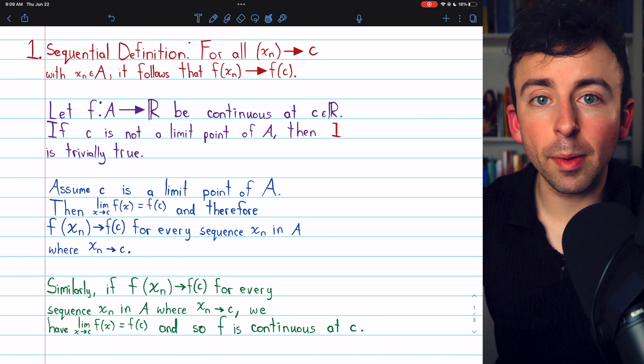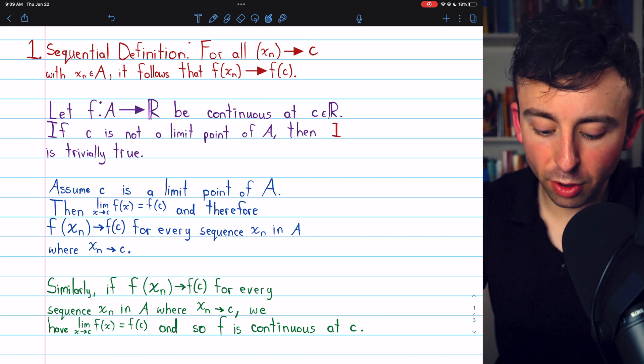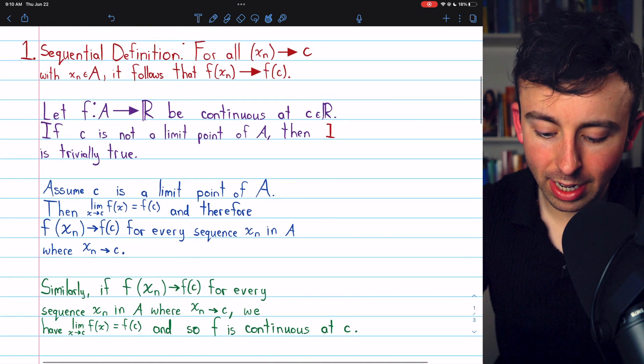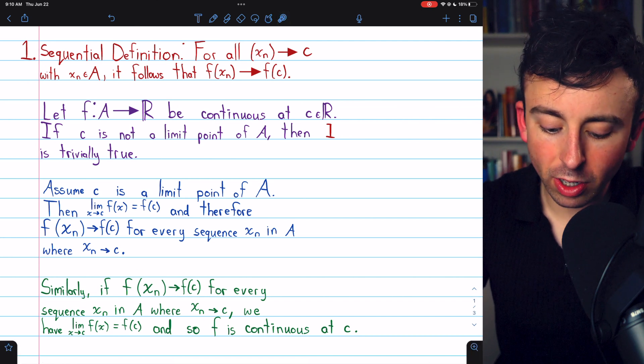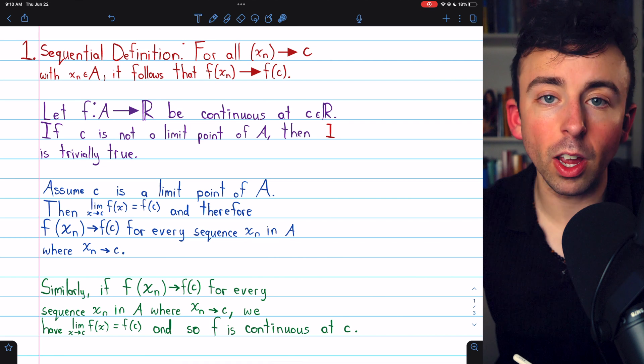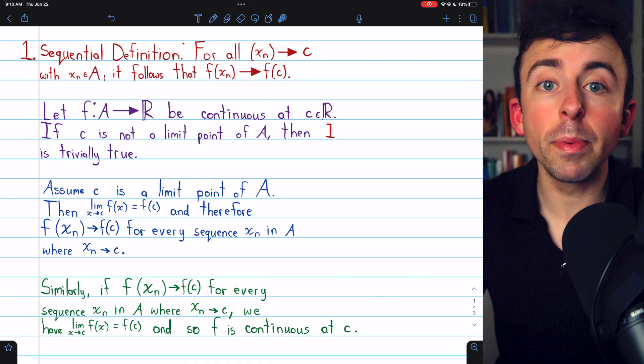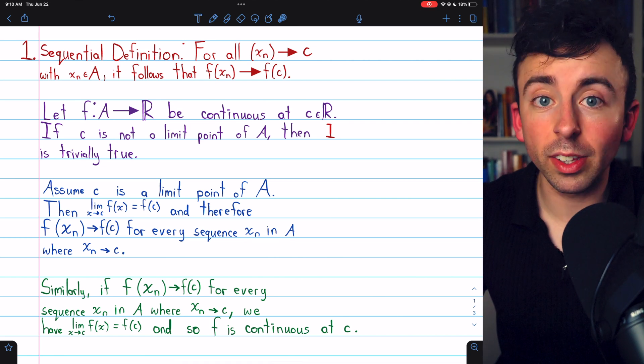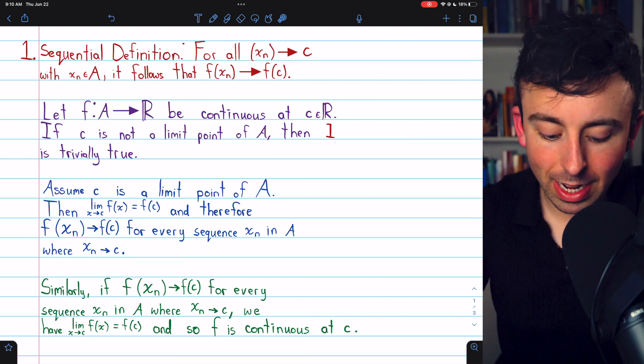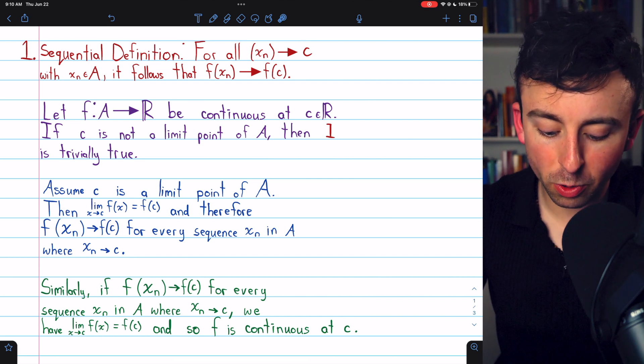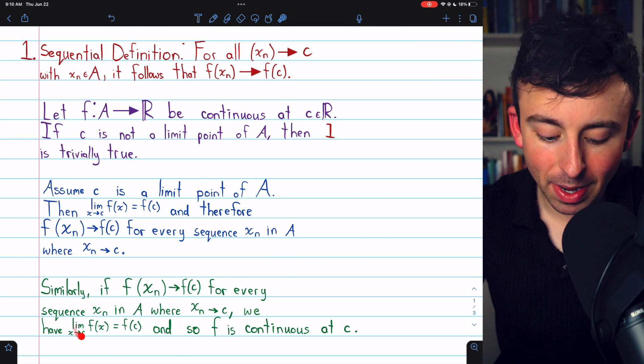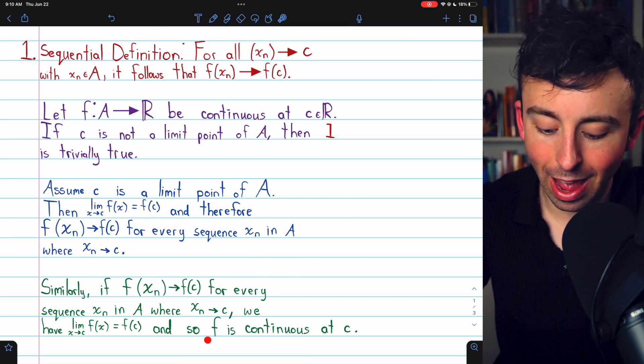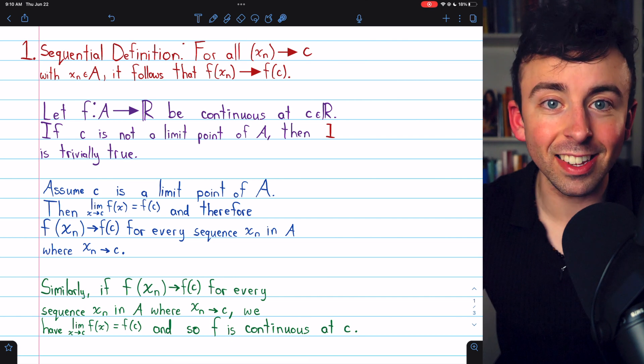Now, proving the converse is just the same argument but in reverse. We assume that for every sequence in the domain that converges to c, the sequence of images converges to the image of c. We're assuming that but then by our previously proven result connecting sequence limits to functional limits, that means that the limit of f of x as x approaches c must equal f of c. But that is the limit definition of continuity. So, f is continuous at c.